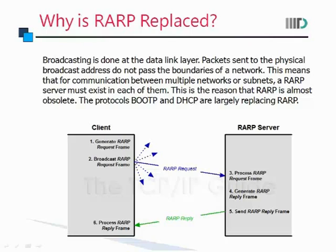Broadcasting is done at the data link layer. Packets sent to the physical broadcast address do not pass the boundaries of a network. This means that for communication between multiple networks or subnets, a RARP server must exist in each of them. This is the reason that RARP is almost obsolete.